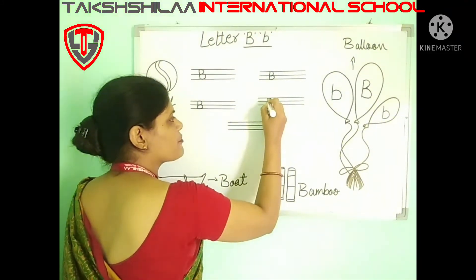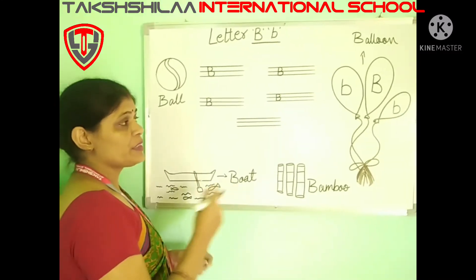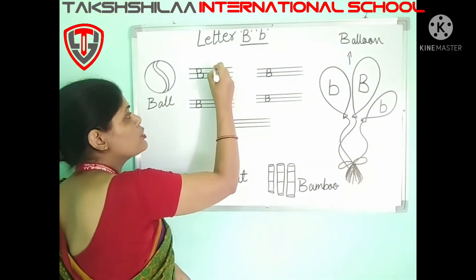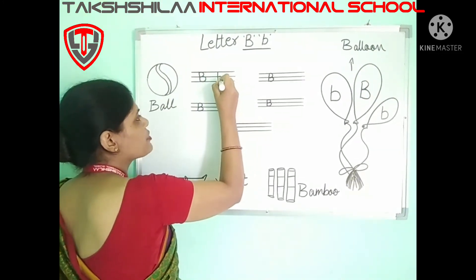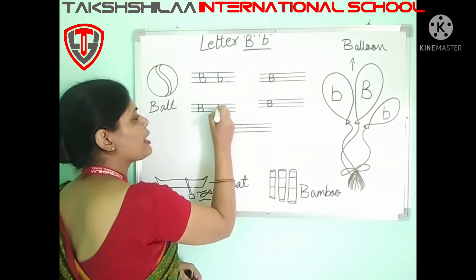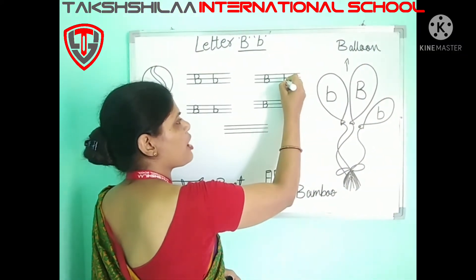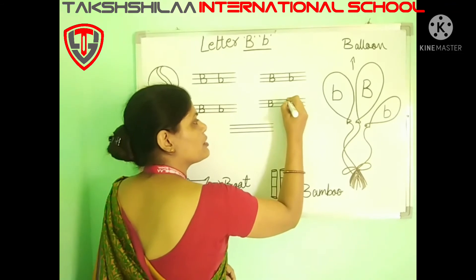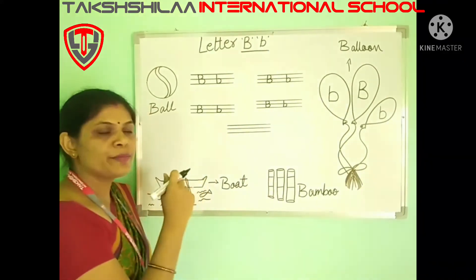Standing line, half curve, one more half curve — this is letter B, capital B. Now kids, let's understand how to write small b. Small letter B kaise likhenge? Uske liye bhi hume use karni hai standing line, and only one half curve. This is our small letter B. Standing line and only one half curve.